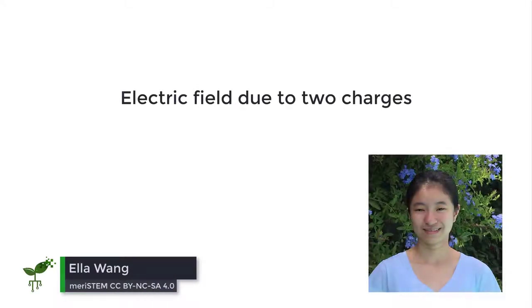Previously, we looked at the electric field surrounding one particle. Now, let's look at the electric field around two particles. Let's say we have one positive particle and one negative particle next to each other.